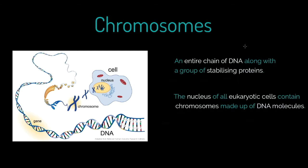Let's talk a little bit about chromosomes. I've put two definitions in here for you — I think both are useful and we'll talk through both. A chromosome is an entire chain of DNA along with a group of stabilizing proteins. So two key things there: an entire chain of DNA with a group of stabilizing proteins.